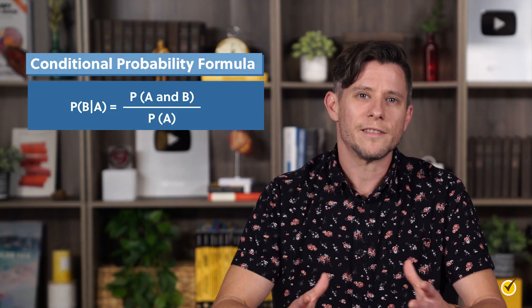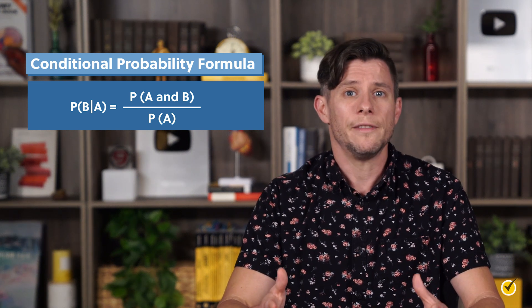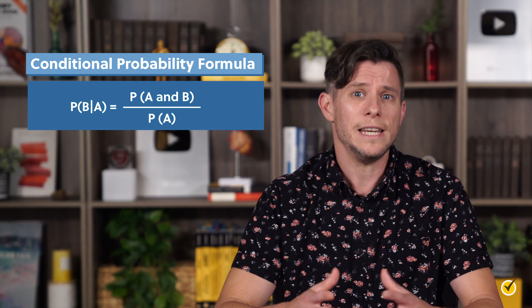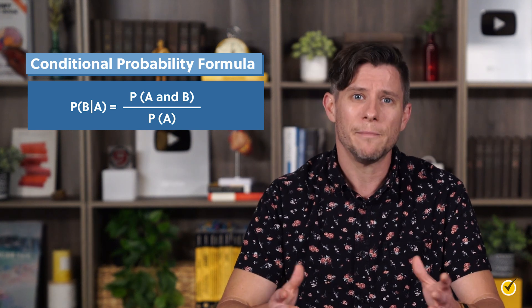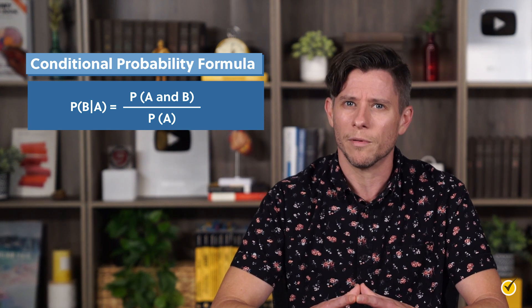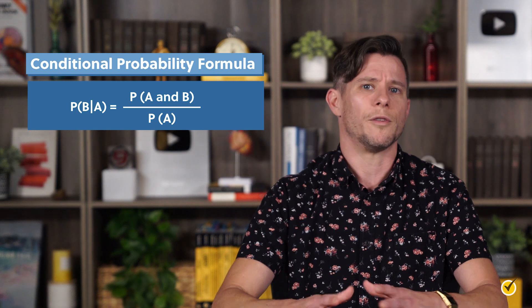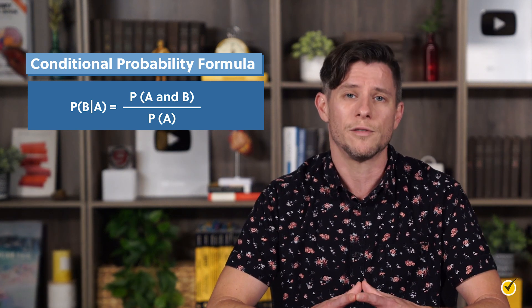There's a faster way to do this than drawing a Venn diagram every time you encounter a conditional probability question — there's a handy formula we can use. We read this formula as: the probability P of event B happening, given that event A has happened, is equal to the probability of events A and B both happening, divided by the probability that event A has happened. In these types of problems, both probabilities on the right side of the equation are usually given, or can be determined from a sentence or table.